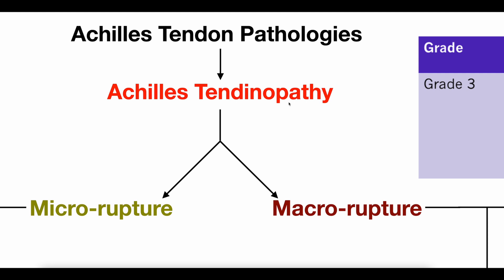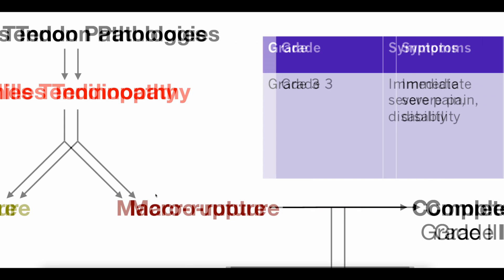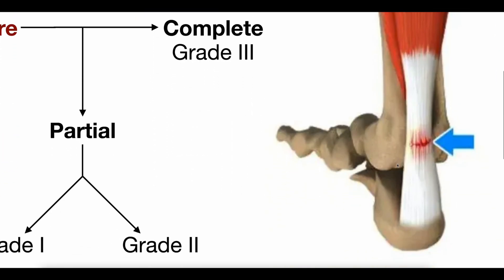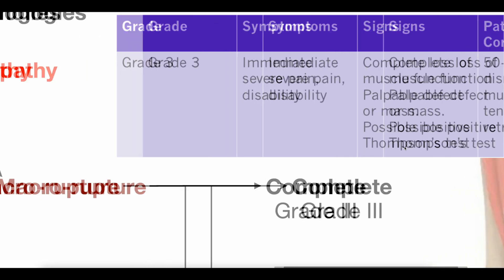The tendinopathy can involve tears or ruptures — either macro ruptures, which are very large and visible to the naked eye if you opened the person up, or micro ruptures. We're going to discuss micro ruptures in this video. Looking at this image, that would be a macro rupture — you can see the damage with your bare eyes, and I'd call this a grade two tear. Micro tears, by contrast, are not visible to the naked eye; you need to look at the microscopic level.